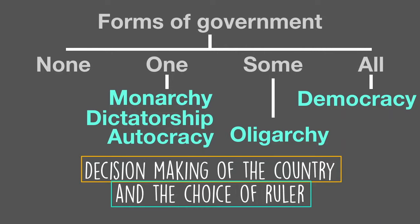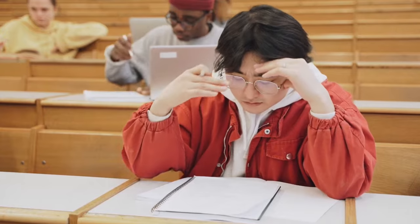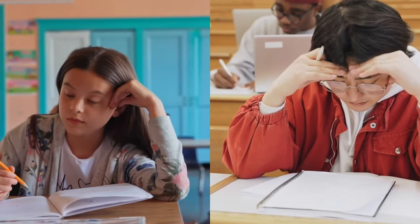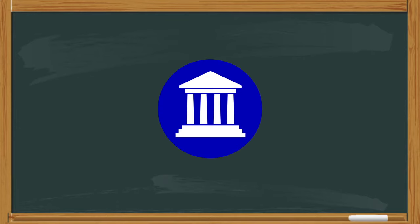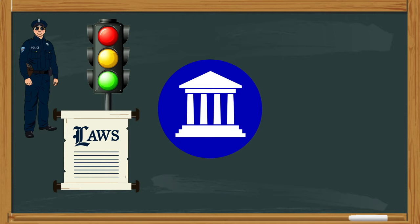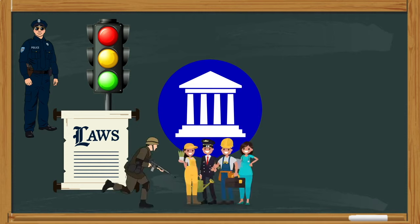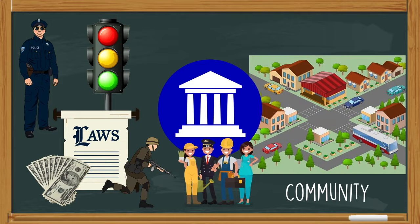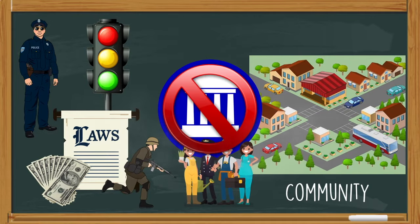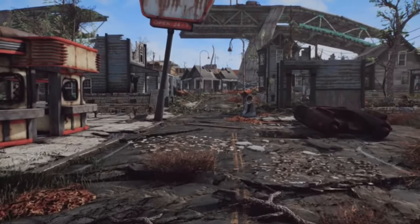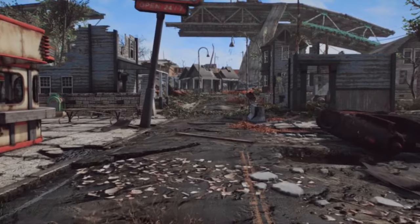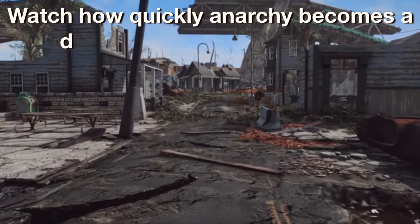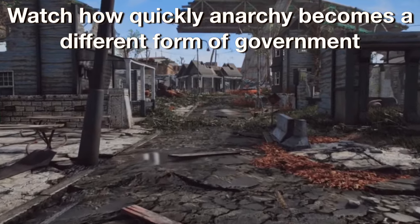The last form of government is when no one's in control — think about what society would look like with no one in charge. Government gives us laws and order, police forces, roads and infrastructure, militaries, jobs, businesses, and currency. Without government, we really have no community, and that can be a very scary place to live. This form of government is called anarchy, and it doesn't last long because eventually somebody is going to take power, whether that's one person, a group, or everybody.